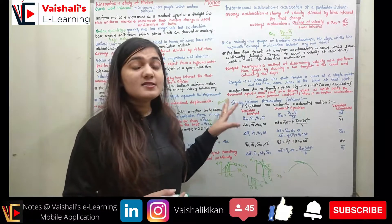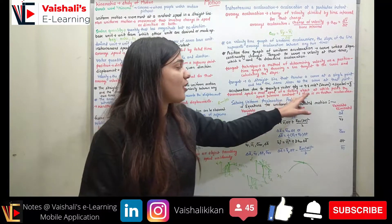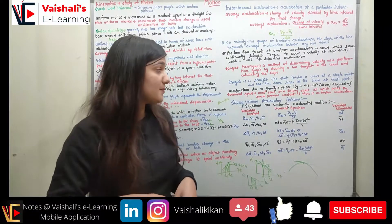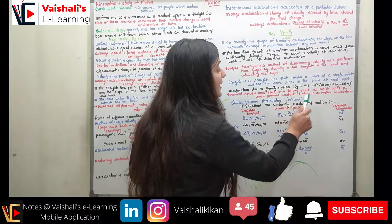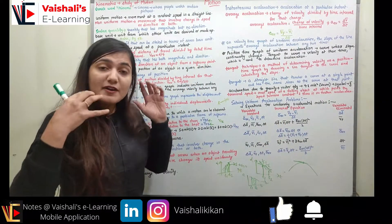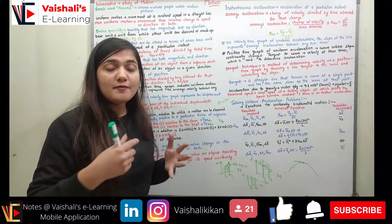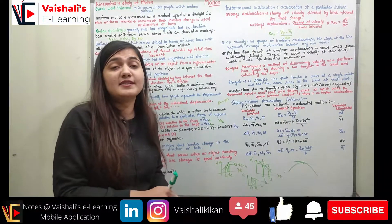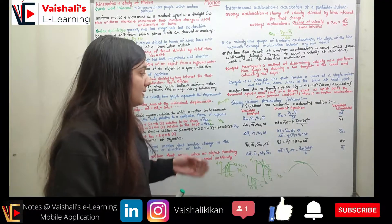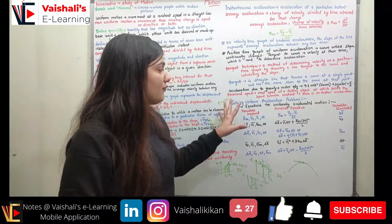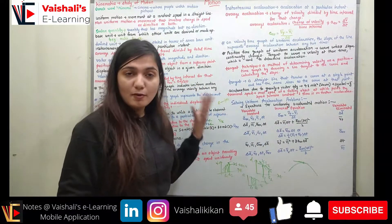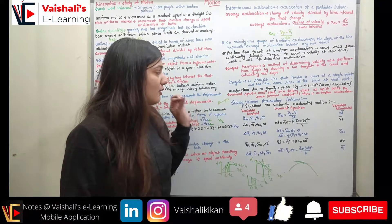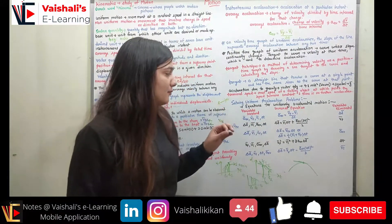Terminal speed is the maximum speed of a falling object — the point at which speed remains constant and there is no further acceleration. Coming to the equations for uniform acceleration: we have several equations depending on which variables are known and which are to be found.